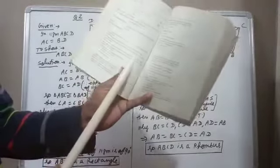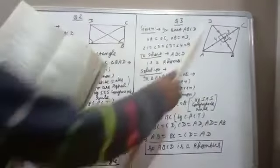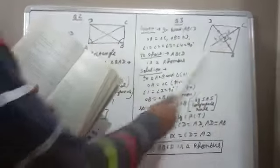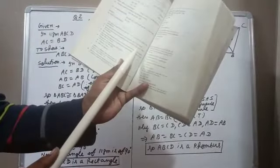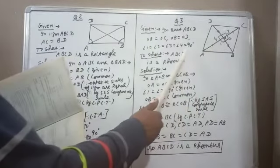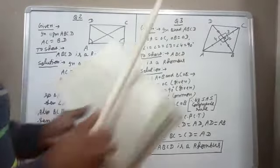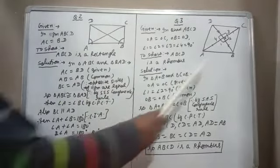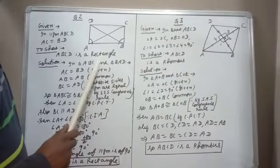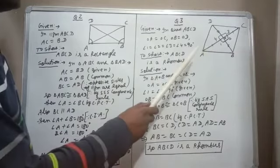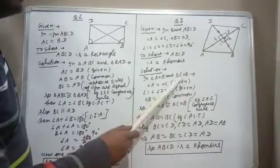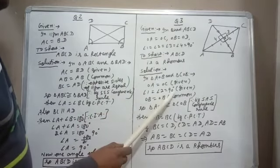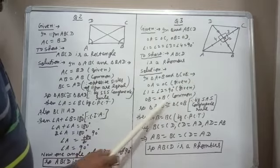Question 3: Show that if the diagonals of a quadrilateral bisect each other at right angles, then it is a rhombus. We draw the figure of a rhombus. Given: in quadrilateral ABCD, diagonals bisect each other, so OA = OC and OB = OD, and they bisect at right angles, meaning angle 1 = angle 2 = angle 3 = angle 4 = 90°. To prove ABCD is a rhombus, we must show all four sides are equal.